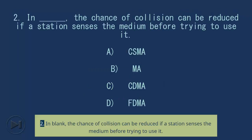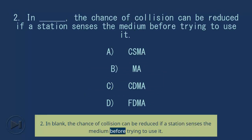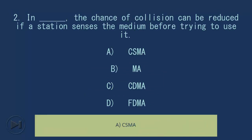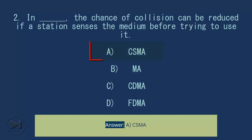Question 2: In blank, the chance of collision can be reduced if a station senses the medium before trying to use it. A) CSMA, B) MA, C) CDMA, D) FDMA. Answer: A) CSMA.